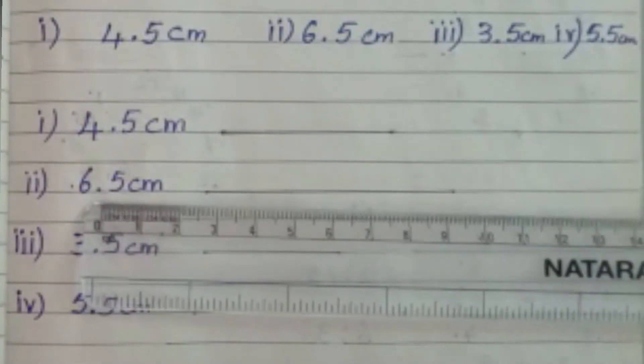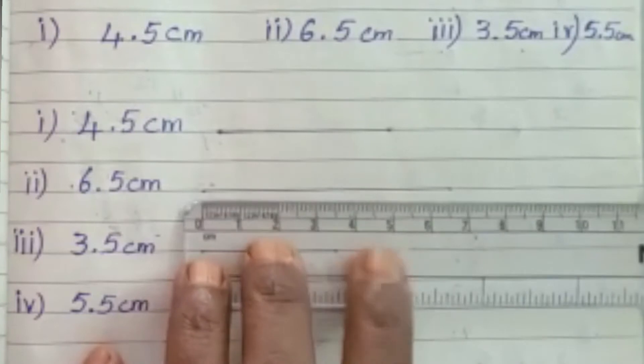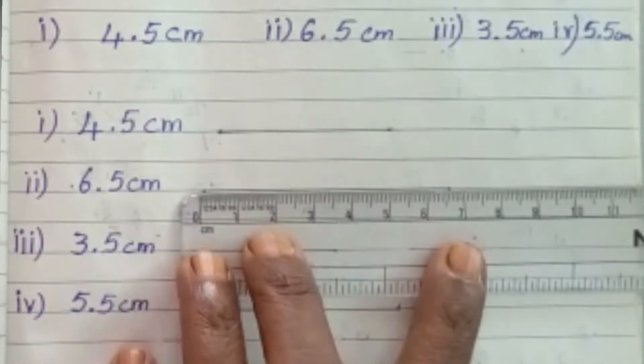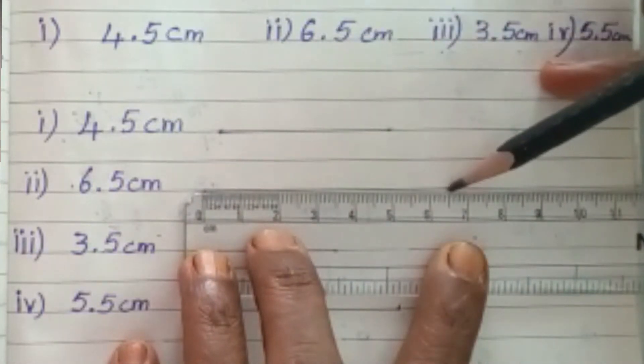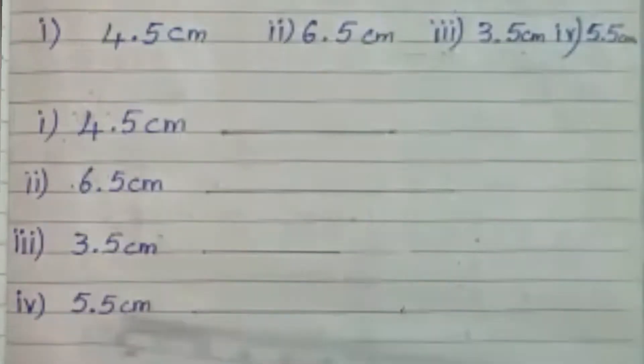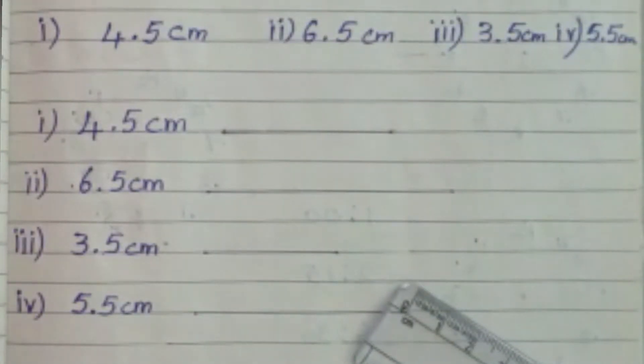See the second question, 6.5 centimeters. Place the scale at 0 point and draw the line from 0 to end point at 6.5 centimeters. Likewise, for 3.5 centimeters and 5.5 centimeters, draw the lines.